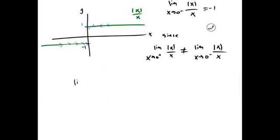Then, the limit as x approaches 0 of the absolute value of x over x does not exist. And we signify that by saying D-N-E.